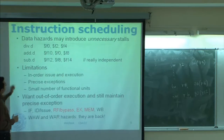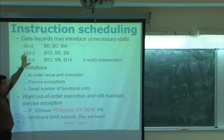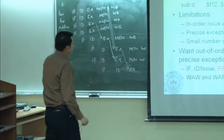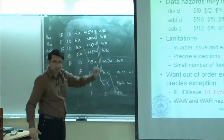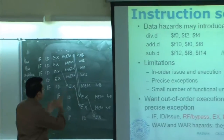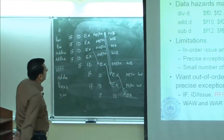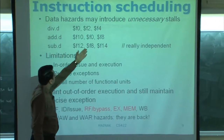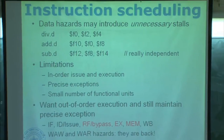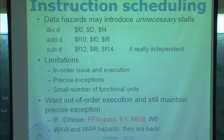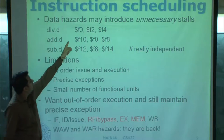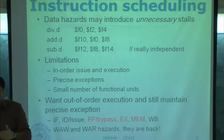Here there is a code snippet showing that data hazards may introduce unnecessary stalls. In our traditional pipeline which can fetch one instruction every cycle: the first instruction is a double-precision division operating on F2 and F4 and producing value in F0. The second one uses F0 and produces value in F10. This third operation uses F8 and F14 and produces value in F12, which is independent of both of these.